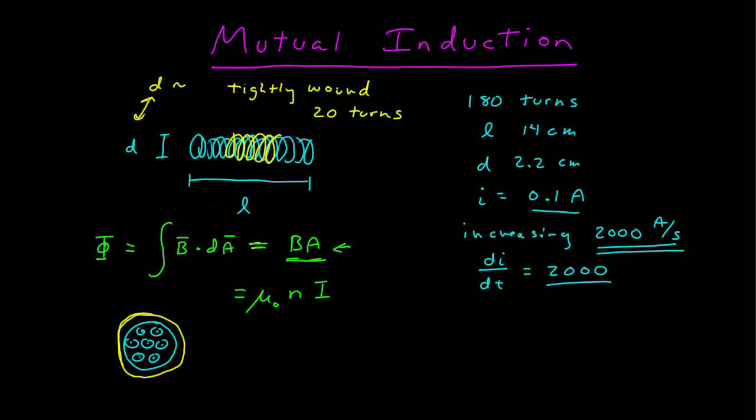We have mu-naught and small i in this case, and then times the area. The area here is pi r squared, the radius of the coil, the radius being 1.1 centimeters.